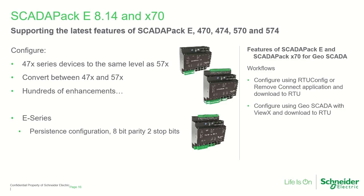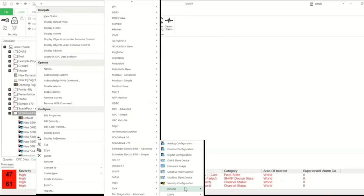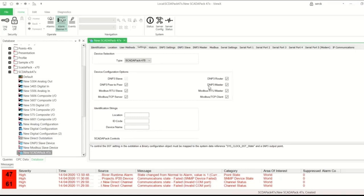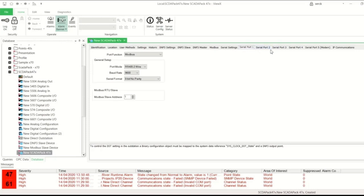SCADAPAC E814, which is the latest version of SCADAPAC E, and SCADAPAC X70 have also been given a facelift to support the latest released features. In particular, the new 470 devices can be configured to the same level as the 570. You can convert between the two different types, and there are literally hundreds of enhancements across all these different RTU types. Our workflows allow configuration using RTU Config and Remote Connect applications, download to the RTU, and also configuration with VueX. You can see here the device configuration of a 470, which brings up the configuration form and allows all fields to be set up, with some differences from the 570 due to variations in hardware capability.